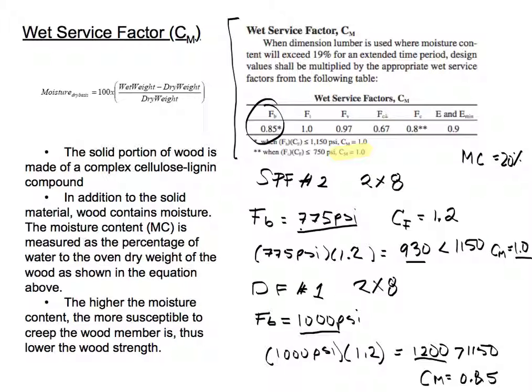That was pretty much it for the wet service factor. If you want to find the moisture content, you could always use this equation. It's the weight when it's wet minus the weight of the species when it's dry, divided by the dry weight, times 100 to get your moisture content. For the most part, the lumber itself is going to be from 7% to maybe 60% in moisture content.